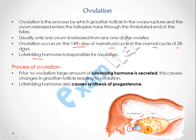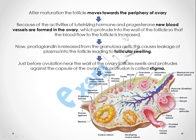The hormone responsible for ovulation is luteinizing hormone (LH). Prior to ovulation, a large amount of LH is secreted, which causes the synthesis of progesterone. This LH and progesterone cause some changes in the Graafian follicle, which finally leads to ovulation. Ovulation is a gradual, step-by-step process.